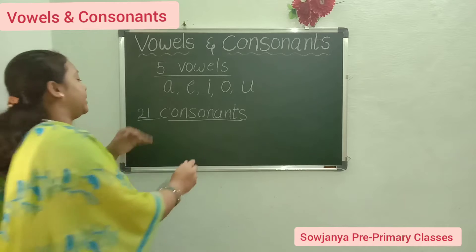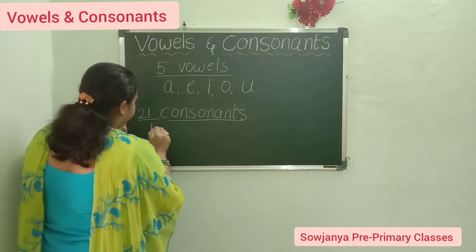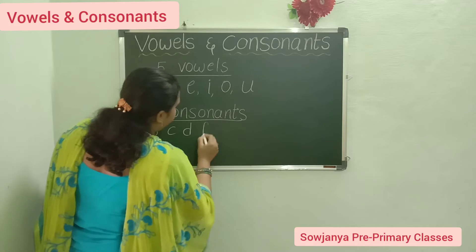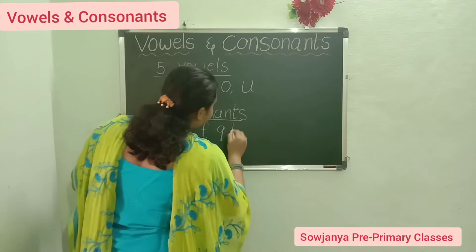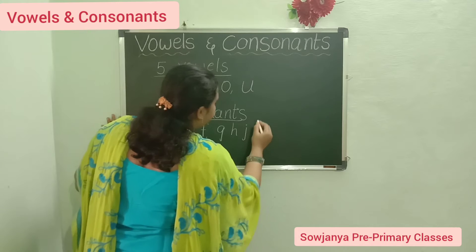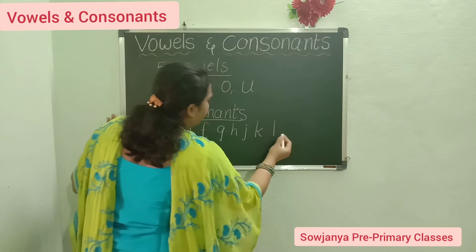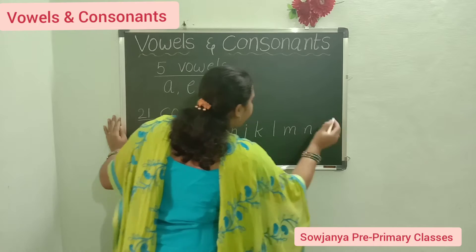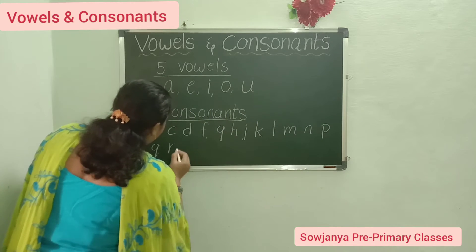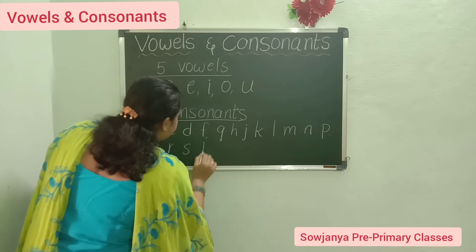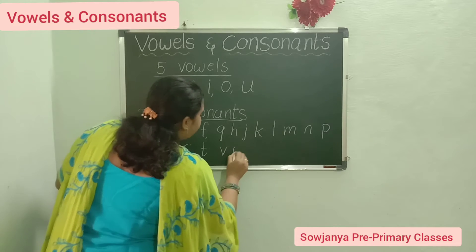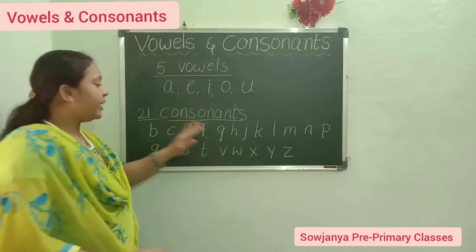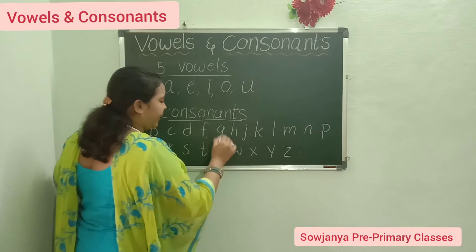What are their names? B, C, D, F, G, H, J, K, L, M, N, P, Q, R, S, T, V, W, X, Y, Z. These are the names of the consonants.